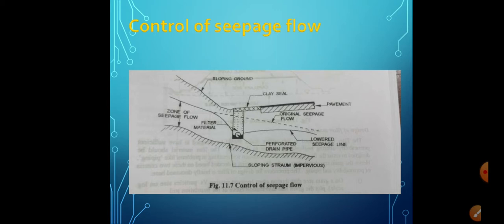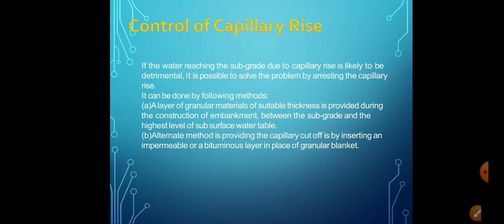Controlling seepage flow: when the ground surface as well as the impervious strata below are sloping, seepage flow is likely to exist. If the seepage zone is at a depth less than around 0.6 to 0.9 meters from the subgrade level, a longitudinal pipe drain in a trench filled with filter material and a clay seal may be constructed to intercept the seepage flow, thereby lowering it to the desired depth and also controlling capillary rise.